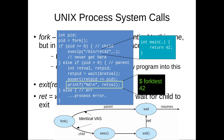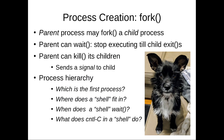Let me reemphasize: the parent may call fork, which makes it the parent and also runs a child process. Both the parent and child return textually from that call to fork, discriminated by the return value — zero for the child, or a positive PID value corresponding to the child if we're the parent.